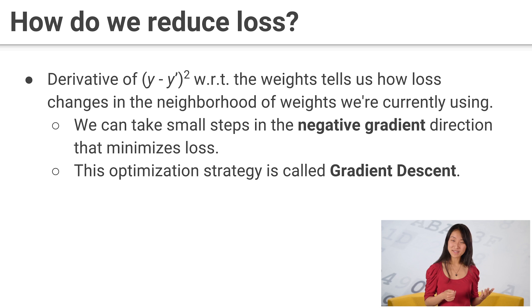One way to get a direction is to compute the gradient, the derivative of the loss function with respect to the model parameters. For simple loss functions like the squared loss, the derivative is easy to compute and gives us an efficient way to update model parameters.